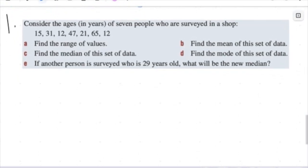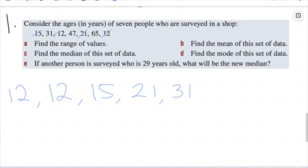Now we're going to go through one example. The question says: consider the ages in years of seven people surveyed in a shop. We want to find the range, mean, median, and mode. The first thing I'm going to do is arrange the data points in ascending order: 12, 12, 15, 21, 31, 47, 65.